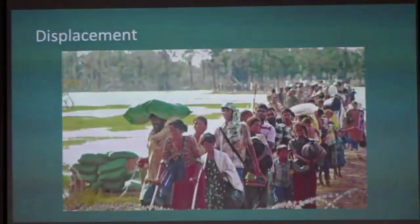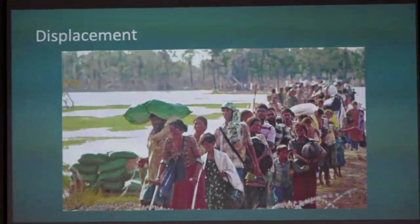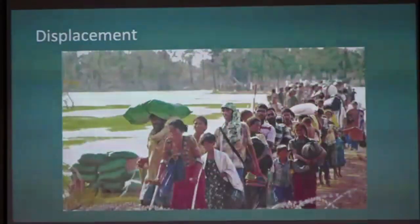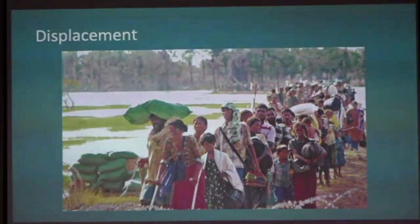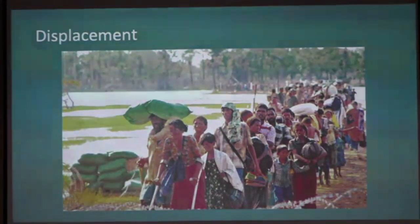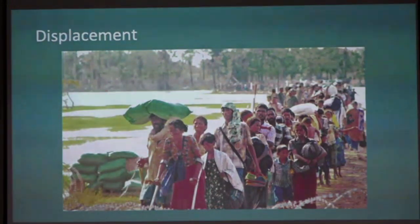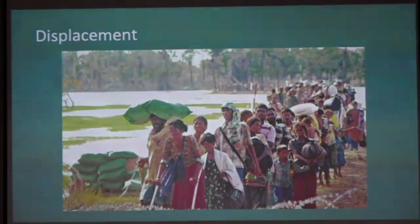We need to think about displacement. We're going to see internal displacement as people move away from areas that are not habitable anymore due to extreme temperatures and loss of livelihoods, so they'll relocate. Urbanization will probably continue, and we know that climate change is reshaping the global map of habitable areas — so is your health infrastructure in the areas where people are going to be living in the next 10 to 20 years?